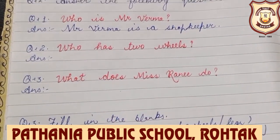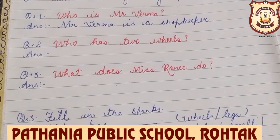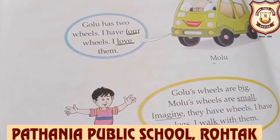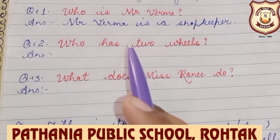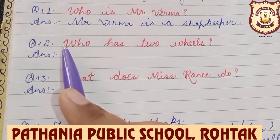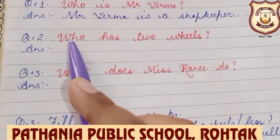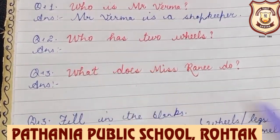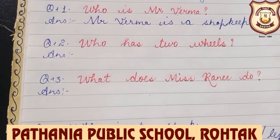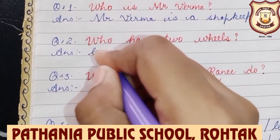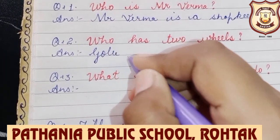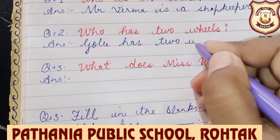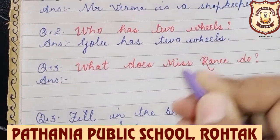Who has two wheels? Two wheels kis ke hain? Golu has two wheels. Kis ke paas hai two wheels? Golu. So the answer is Golu has two wheels. You have to just write Golu instead of who. Who ka matlab hota hai kaun? Kis ke paas hai — here we are talking about possession and 'has'. So the answer is Golu has two wheels.